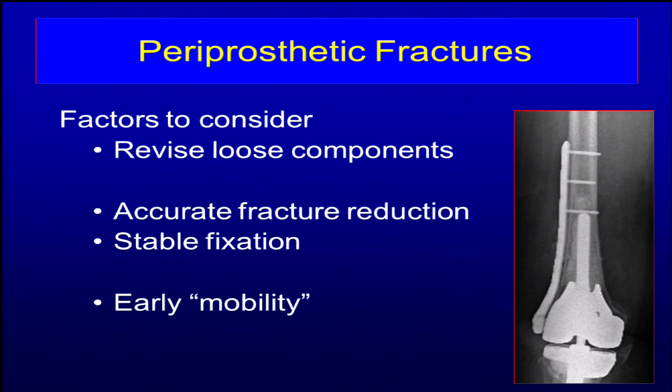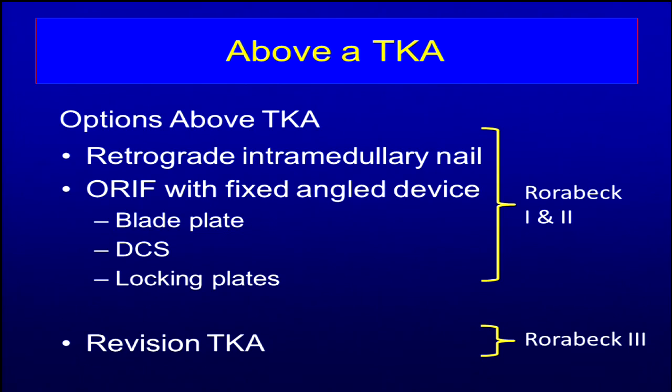Moving on to treatment. Number one, do you need to and do you have the capability to revise a loose component? If we're going to fix it, we definitely want to shoot for anatomic high-quality reduction, either with a compressive technique or with bridge plating. You need to plan this out ahead of time and plan your fixation. And then we want to get early mobility — you can get grandma up and out of bed.